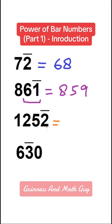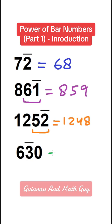1 2 5 bar 2 means 1248, because 5 bar 2 means 50 minus 2. And 6 bar 3 0 means 570.